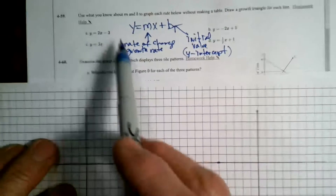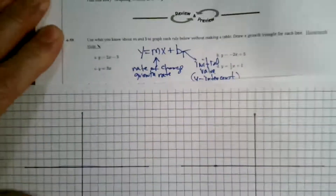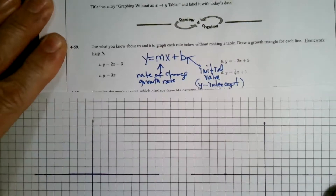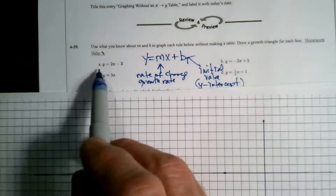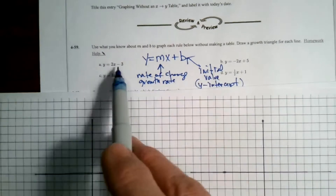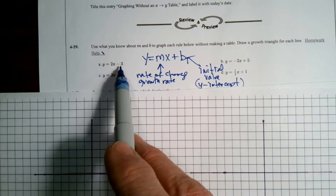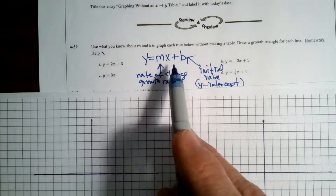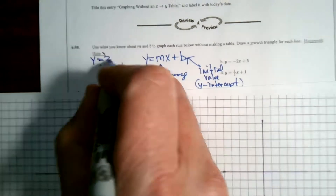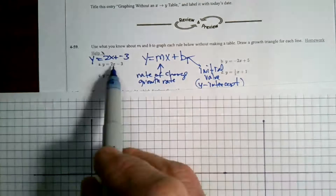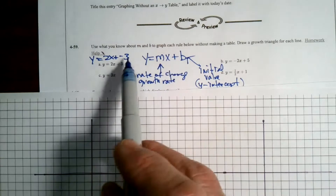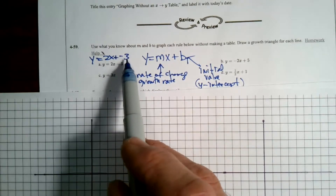Let's talk about A. A is Y equals 2X minus 3. So the rate of change is 2. The initial value — that minus 3 is considered a negative 3. I would rewrite this as Y equals 2X plus negative 3, so that way I have the plus that's in the standard rule, but I notice that number is a negative 3.